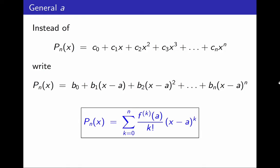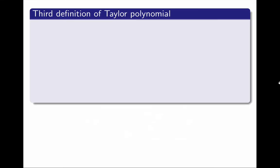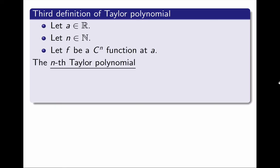I found what I was looking for, an explicit formula. I am going to call this the third definition of Taylor polynomials. Given a C^n function f at a point a, the nth Taylor polynomial for f at a is this polynomial. That's it!